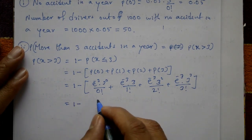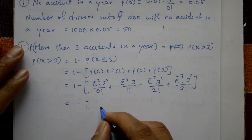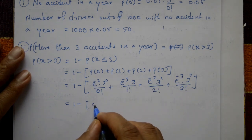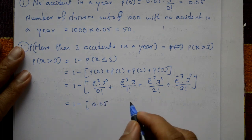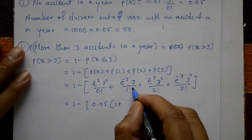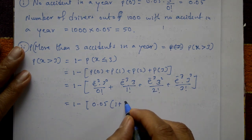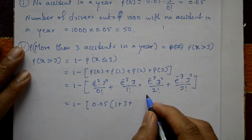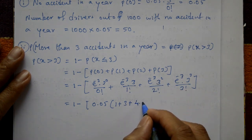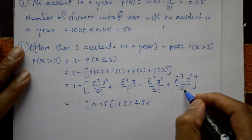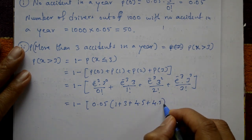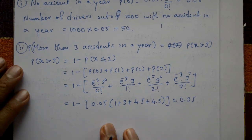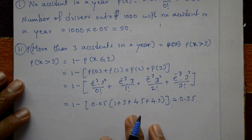Taking e raised to minus 3, which equals 0.05, as common factor outside: one plus 3 divided by 1 plus 9 divided by 2 (which is 4.5) plus 27 divided by 6 (which is also 4.5). The sum inside the bracket equals 13, and multiplying gives approximately 0.35. So the probability of more than three accidents in a year is 0.35.